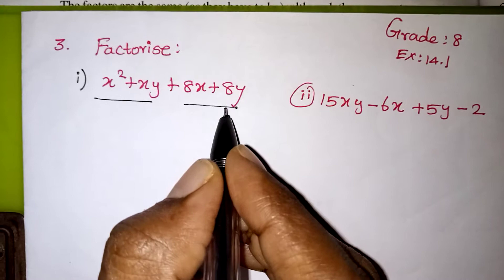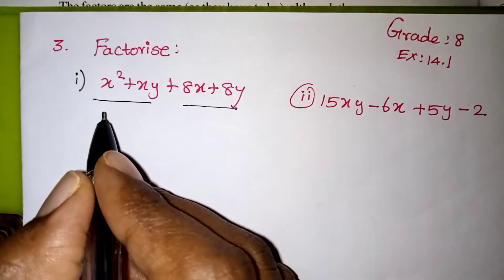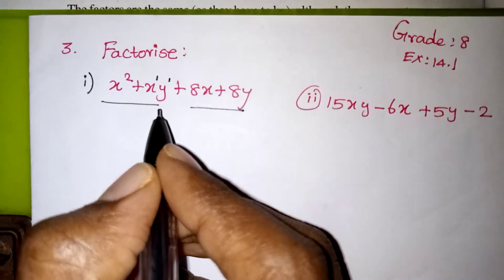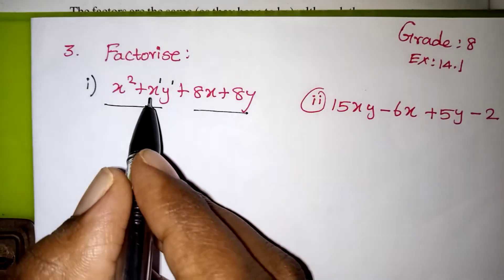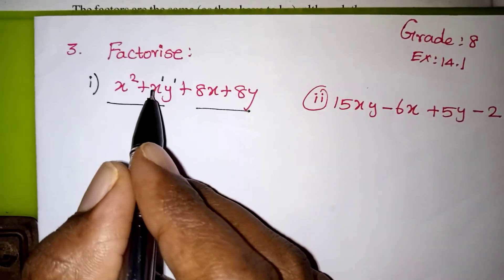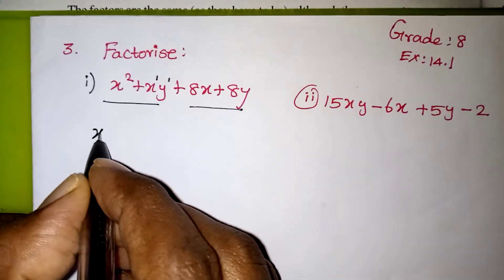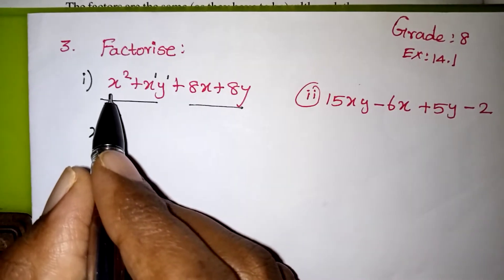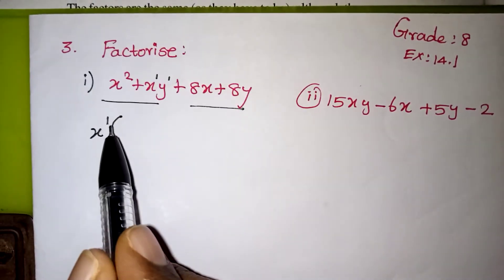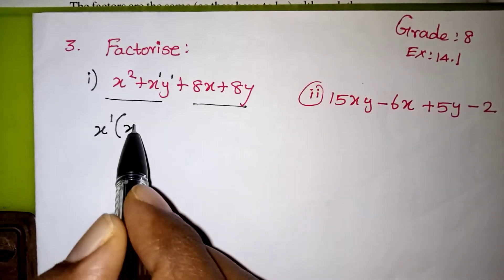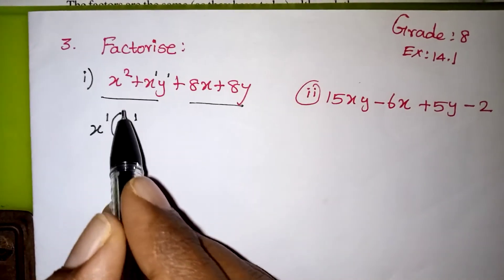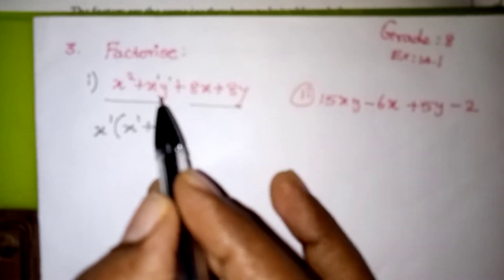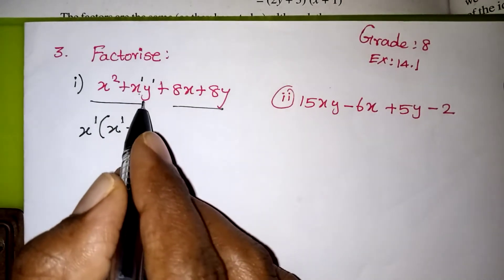After pairing the terms, we have to take the common term outside. Here we have x² and xy. x² is x power 2 and xy is x power 1 · y power 1. Since two x's are in x² and one x is in xy, we can take one x as common outside. After taking x out, the remaining from x² is x, and from xy the remaining is y.